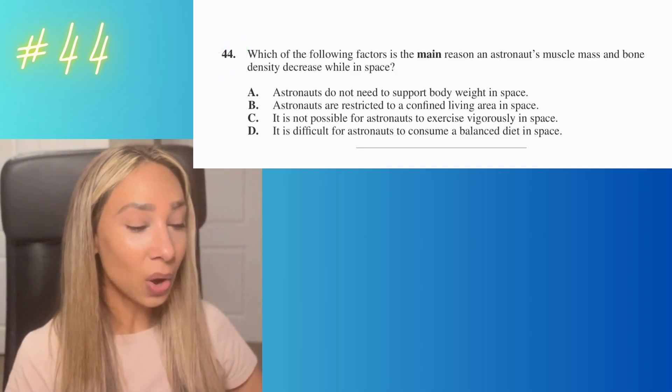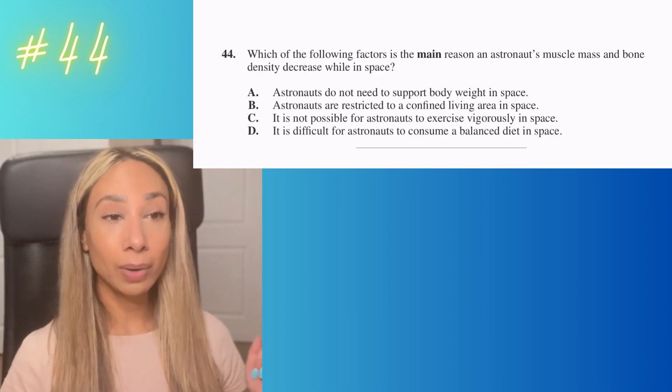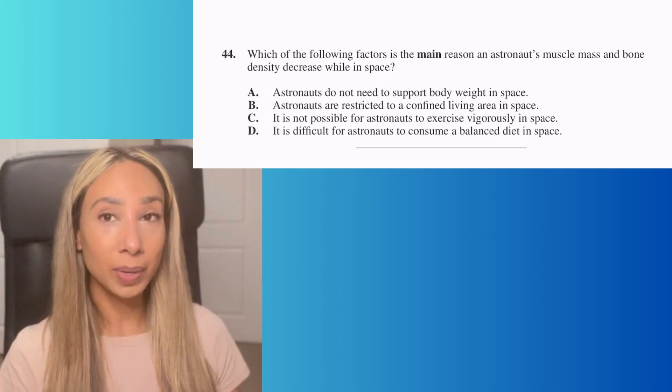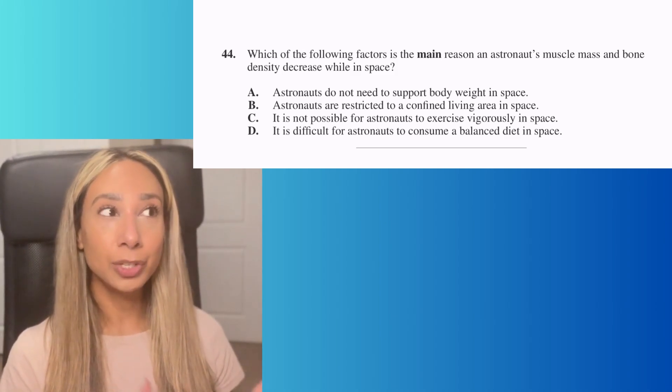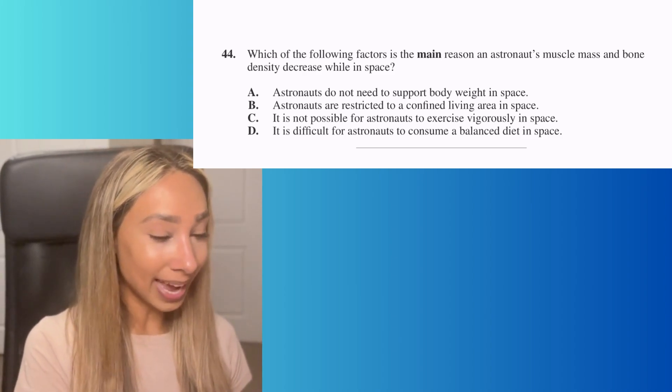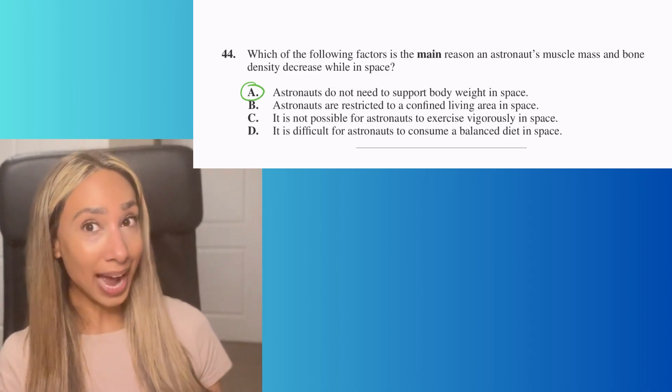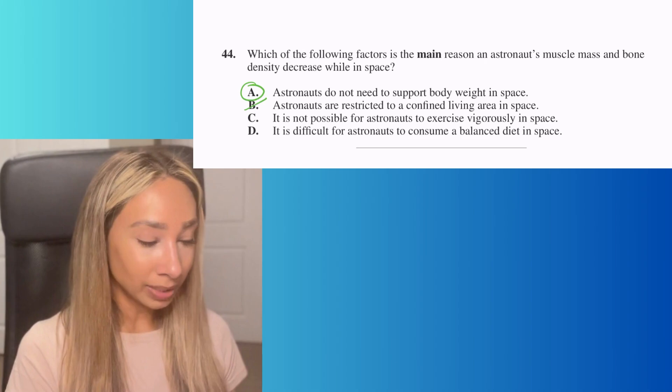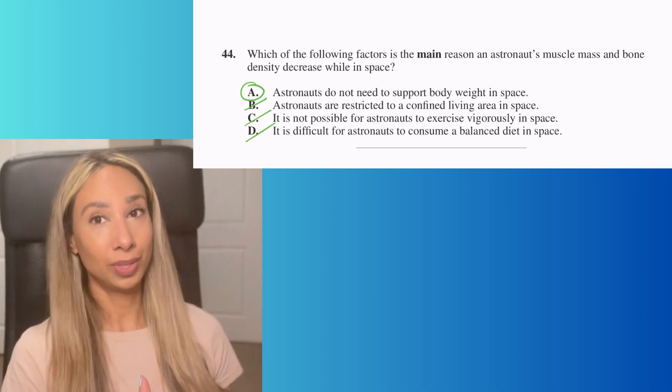Number 44. This one's asking what's the main reason an astronaut loses muscle and bone mass. A lot of this has to do with gravity. The reason we are the way we are is because we've been working against gravity our entire lives. In space you don't have gravity, so your muscles don't need to work as hard. The only answer that works is A: they don't need to support the same body weight because they don't have the same force acting on them as on Earth. The rest are true but the main reason has to do with gravity.